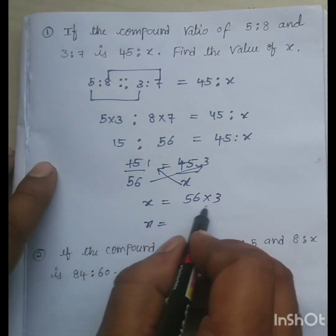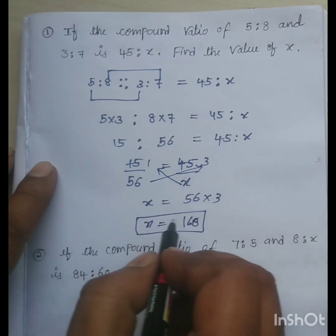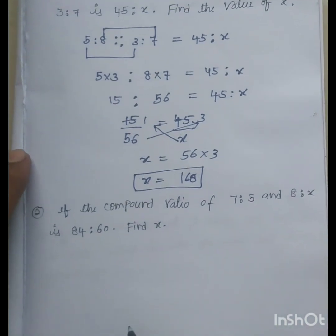So, X is equal to 36, 18, 1, 3, 5, the 15 plus 1, 16. So, X value how much is? X value is 168.